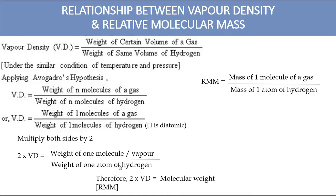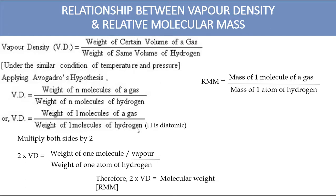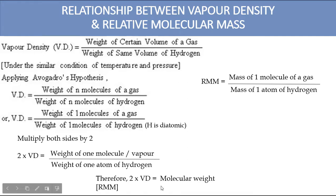So the formula is: molecular weight = 2 × vapor density. Remember this formula for all numerical calculations. The derivation is not required for the exams; it is just for understanding how we arrive at the relation between vapor density and relative molecular mass.